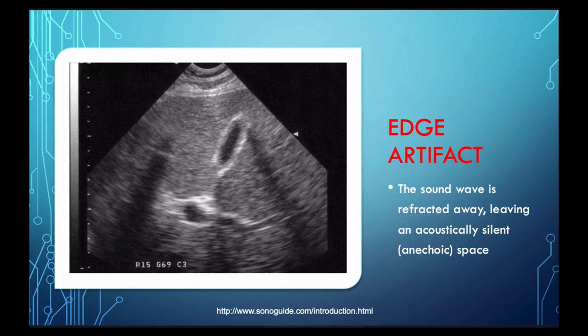That is not to be mixed up with edge artifact. Edge artifacts occur basically because sound waves travel in straight lines. The edge artifact occurs as these waves encounter a curved structure and are refracted in different directions, and it leaves an acoustically silent or anechoic area that kind of extends out from the side of that structure.